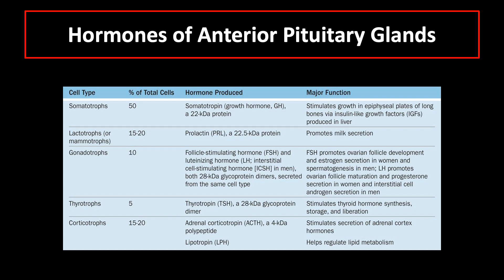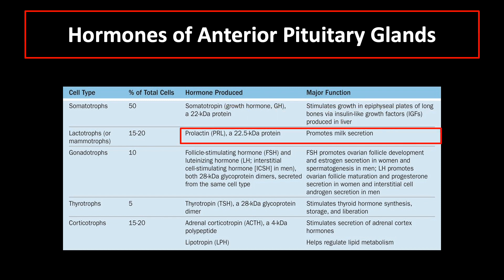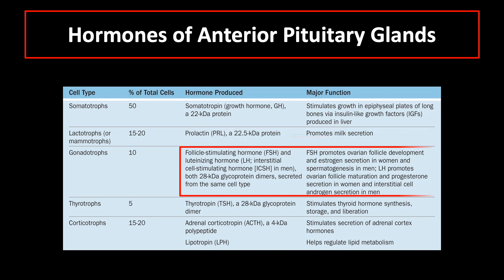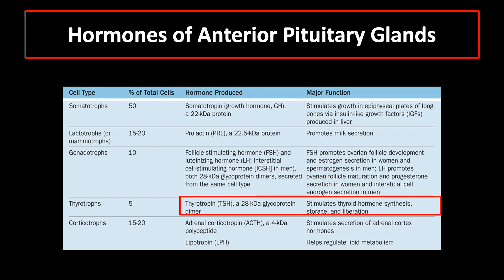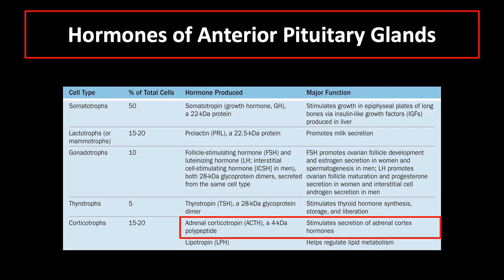A summary of the hormones produced by the anterior pituitary gland: growth hormone stimulates growth in epiphyseal plates of long bones; prolactin promotes milk secretion; follicle-stimulating hormone promotes ovarian follicle development and estrogen secretion in women and spermatogenesis in men; luteinizing hormone promotes ovarian follicle development and progesterone secretion in women and interstitial cell androgen secretion in men; thyroid-stimulating hormone stimulates thyroid hormone synthesis, storage, and liberation; and adrenocorticotrophic hormone stimulates secretion of adrenal cortex hormones.